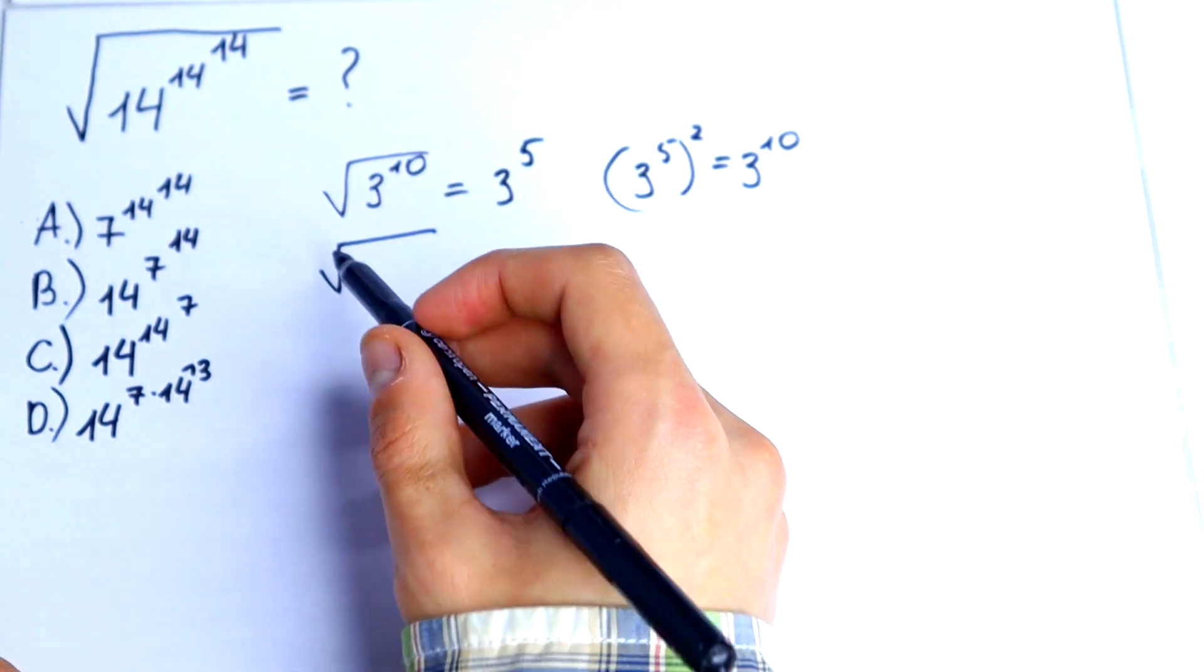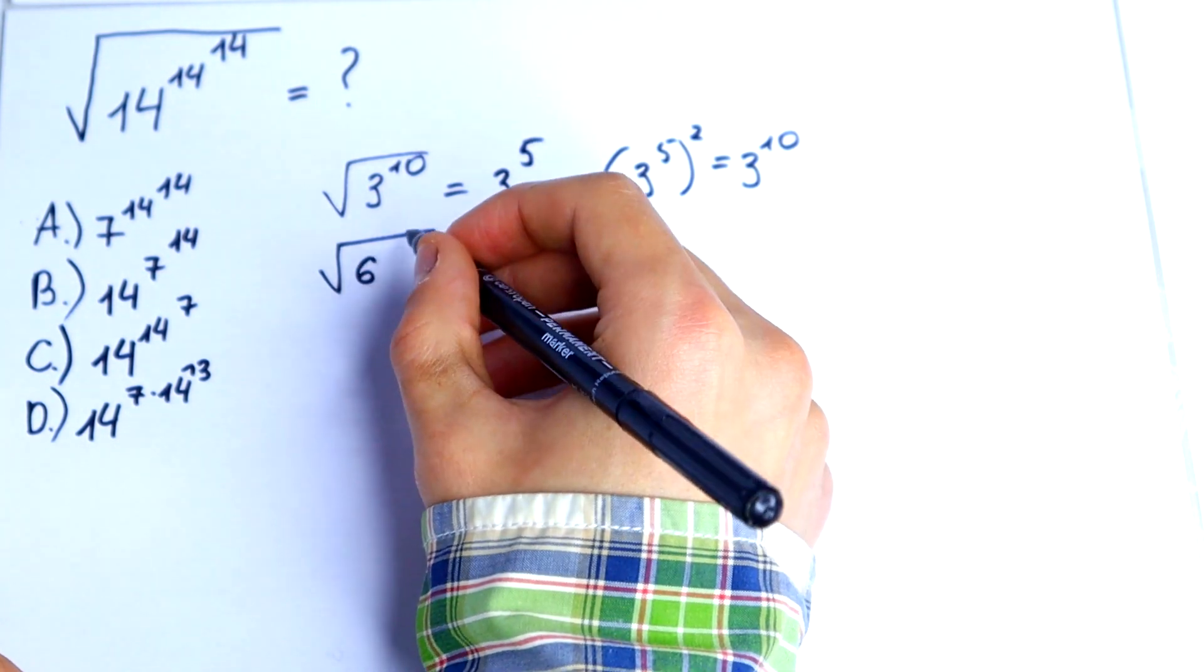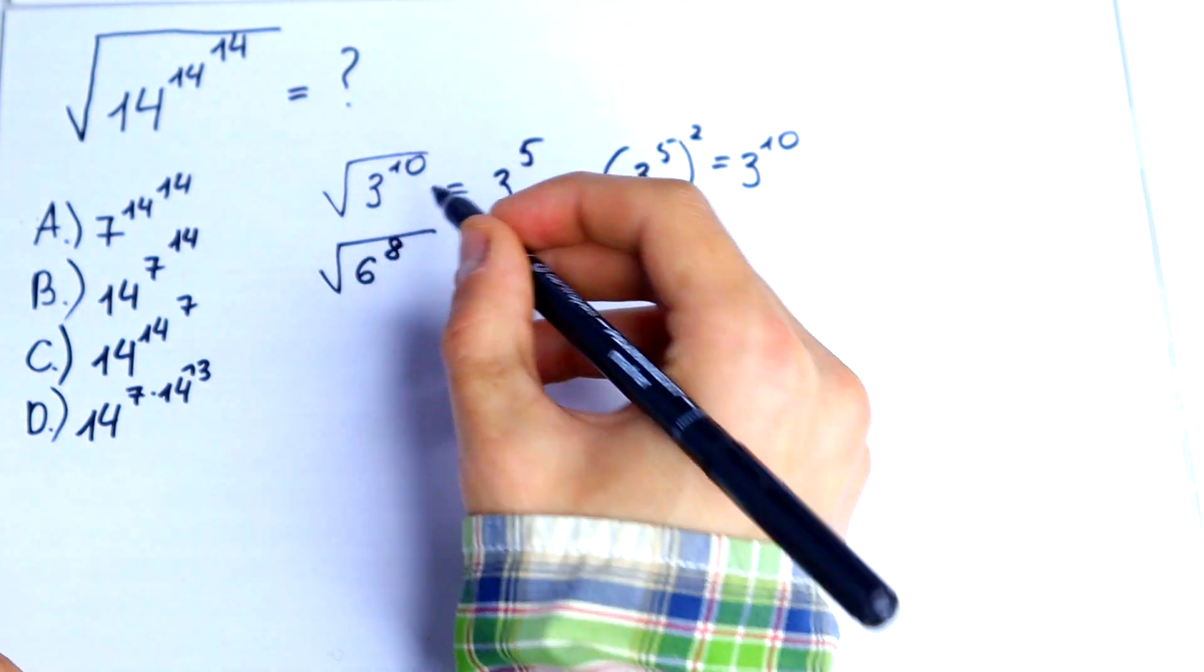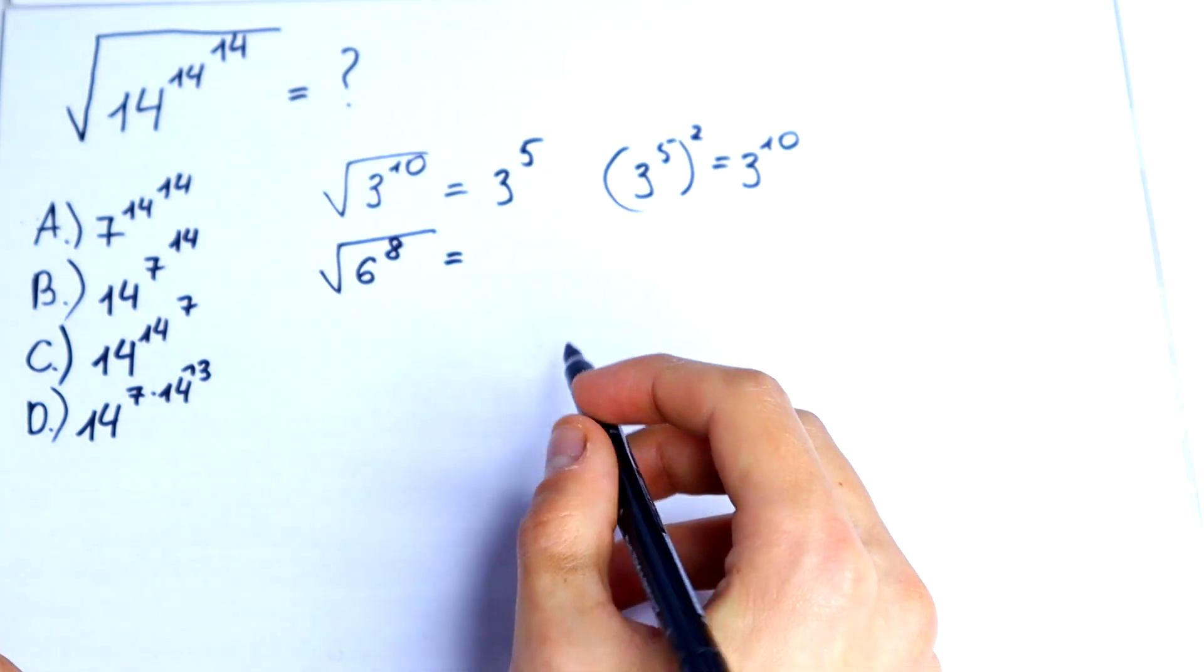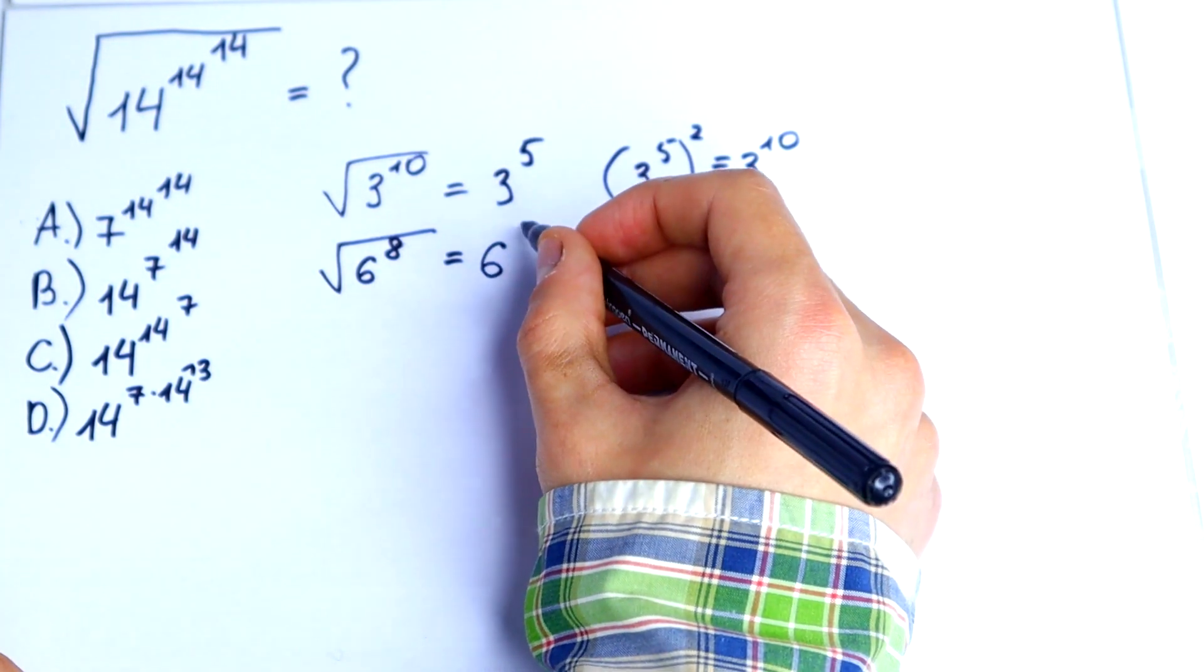For another example, the square root of 6 to the 8th power would equal 6 to the 4th power.